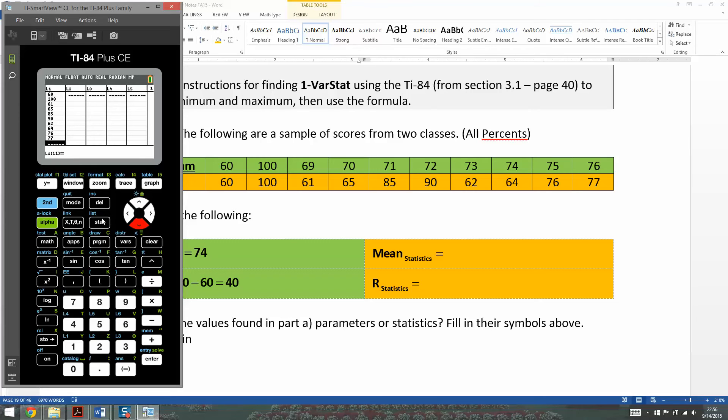Now we press STAT, go to the right to CALCULATE, pick number one, one variable STATS. All of our data is in L1, so I'm going to leave LIST as L1, FREQUENCY LIST as BLANK, and go down to CALCULATE and press ENTER. At the top, I can see that the mean is 74. If I scroll down, I can see the max is 100 and the min is 60. When I subtract the two, I get 40.